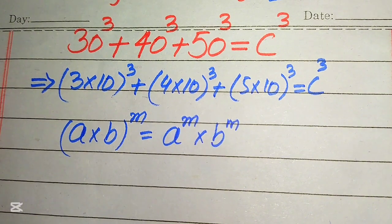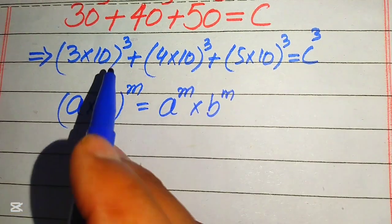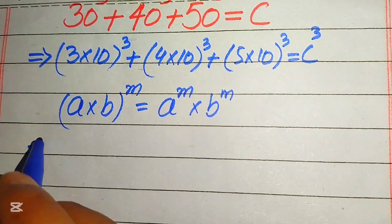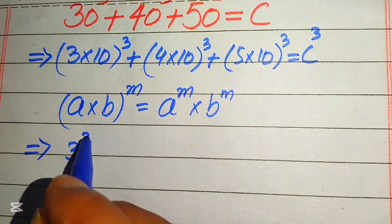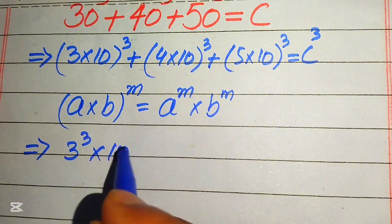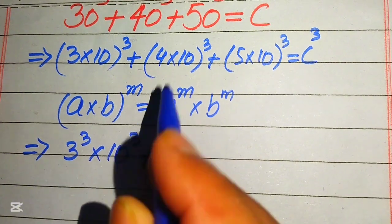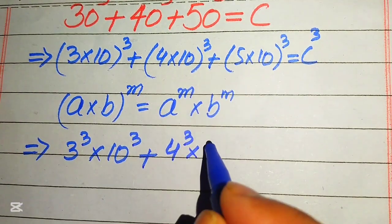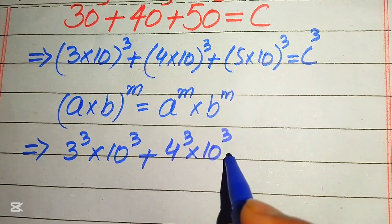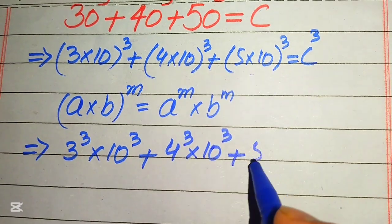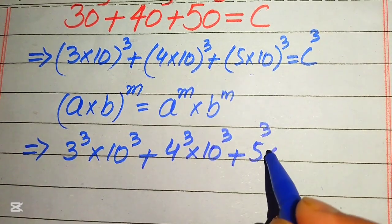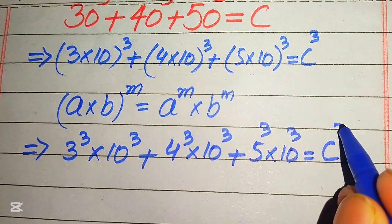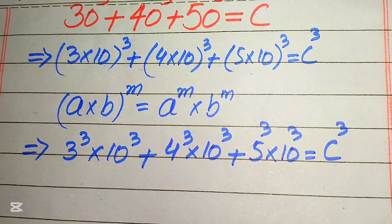We apply this cube separately on both values, so it is written as 3 cubed multiplied by 10 cubed, plus 4 cubed multiplied by 10 cubed, plus 5 cubed multiplied by 10 cubed, and this whole equation equals C cubed.